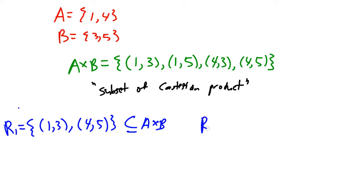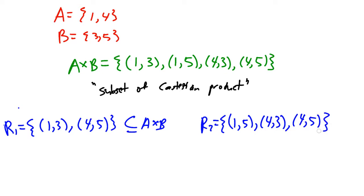Let's find another relation, R2. Let's say R2 is {(1, 5), (4, 3), (4, 5)} — that is another subset of the Cartesian product. And let's make R3, which is just {(4, 3)}. That too is a relation on A and B because it's a subset of the Cartesian product.